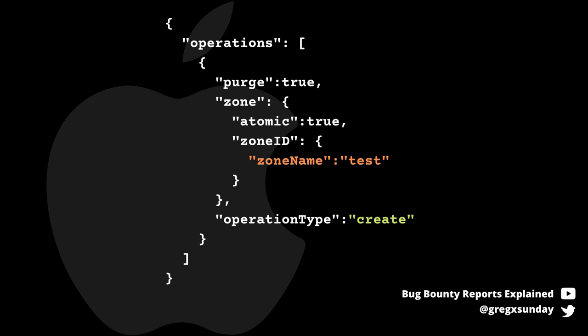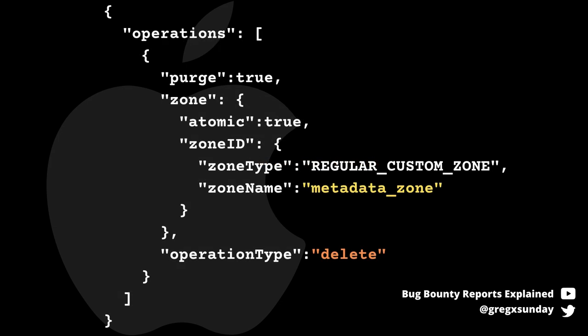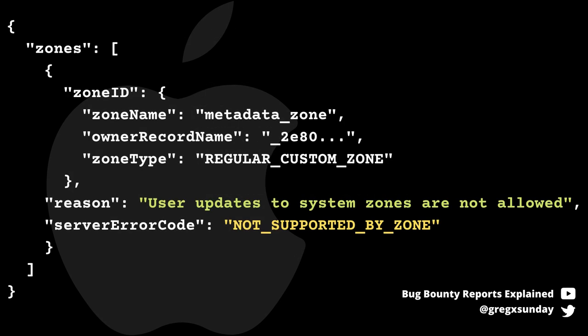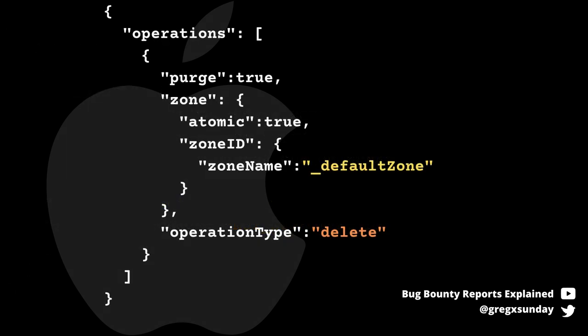Franz wanted to test if it was also possible to delete the metadata zone. There was no other way to test this other than to try to delete it, but he got an error saying "user updates to system zones are not allowed," which was the next hint that access control is properly enforced here. He then tried to delete the default zone as well — it was the last idea he had for testing this functionality. And this time, it worked. Or did it?